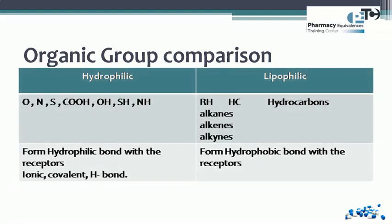When we compare between organic groups, we have two types: either hydrophilic groups or lipophilic groups. Any compound containing oxygen, nitrogen, sulfur, COOH, OH, SH, or NH — any one of those groups makes the compound more hydrophilic. The hydrophilic group makes a hydrophilic bond with the receptors in the body, forming ionic, covalent, or hydrogen bonds.